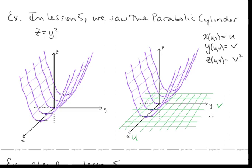Let's take a constant u — say u equals 1. What does that look like in the u, v plane? u equals 1 looks like this. How does that get mapped onto the surface? Well, when u equals 1, we have x equal to 1, y equals v, and z equals v squared. So at x equals 1, we're getting this parabola — y equals v, z equals v squared.